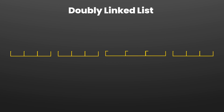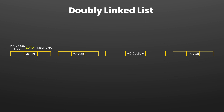The doubly linked list has three parts: the data, the next link, and the previous link. Taking the same example of employee names, the first node has data being John, the next link being the address of the next employee's name, and for the previous link, the first node would not have any previous link because it is the head node. However, the second node would contain a link back to John and a next link pointing to McCallum. Similarly, we can populate this linked list accordingly.